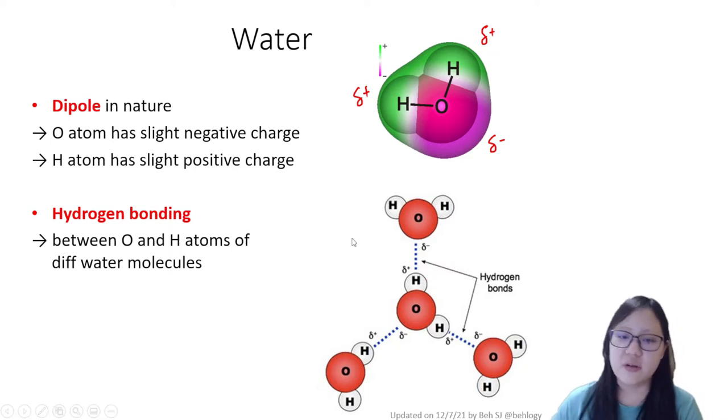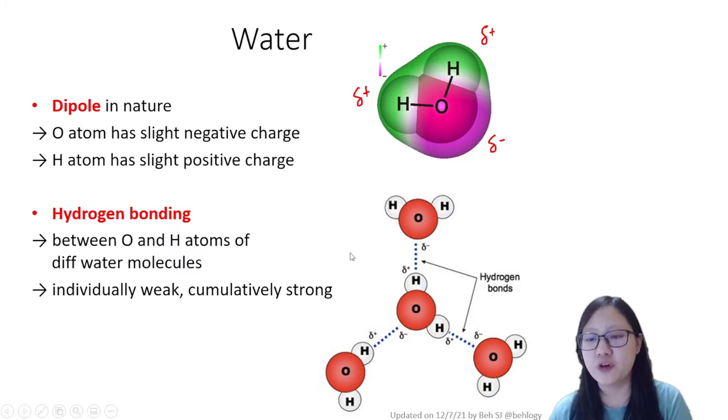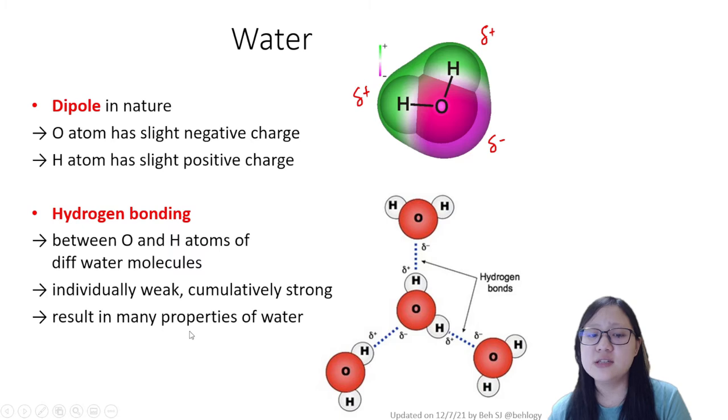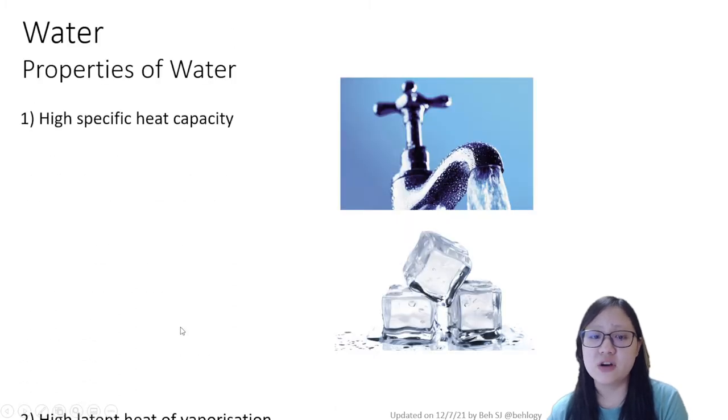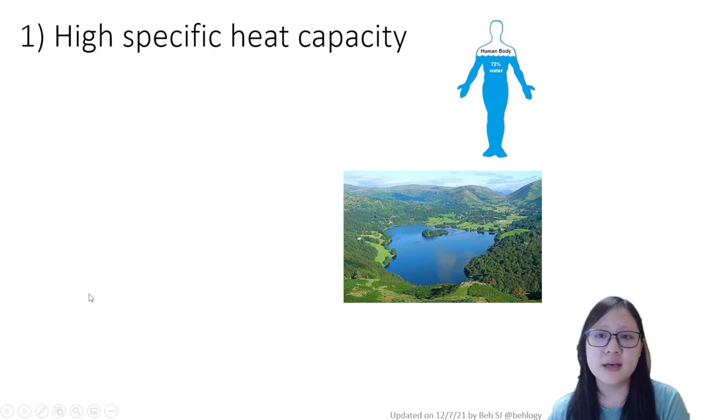Like in proteins, hydrogen bonding is considered to be an individually weak bond, but many hydrogen bonds can be formed at the same time and this makes it cumulatively strong. This results in many properties of water, and these are the properties of water we'll be looking at.